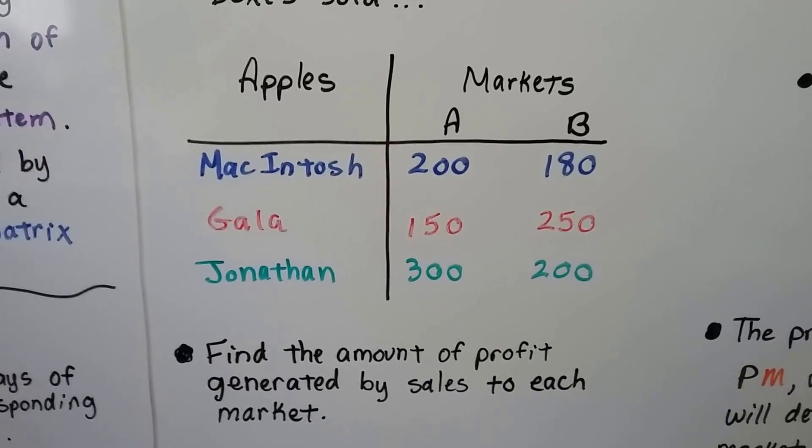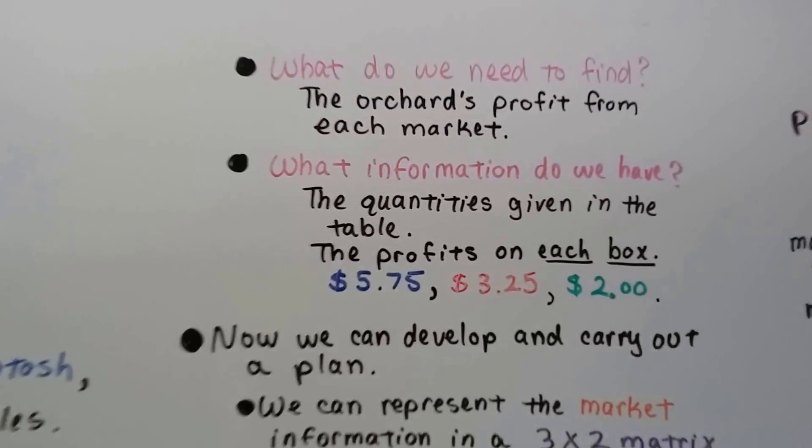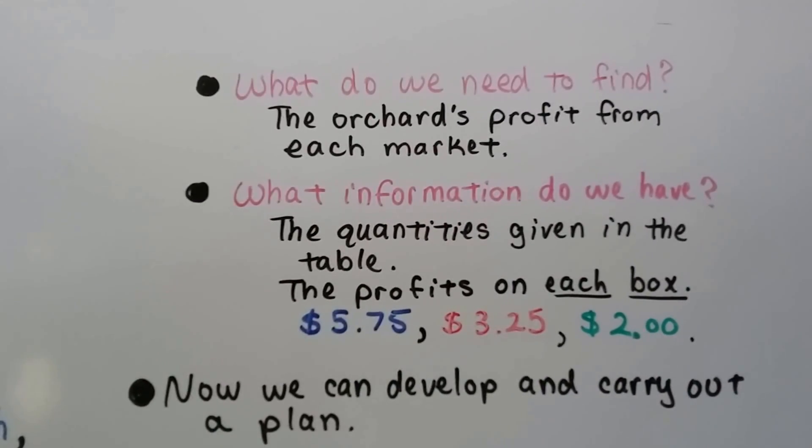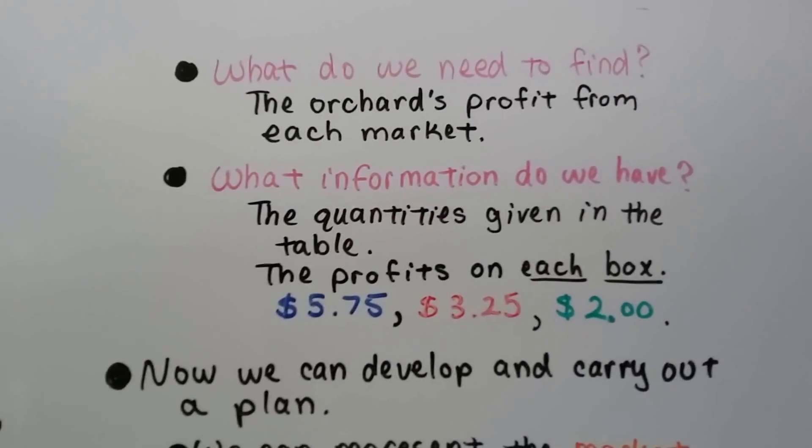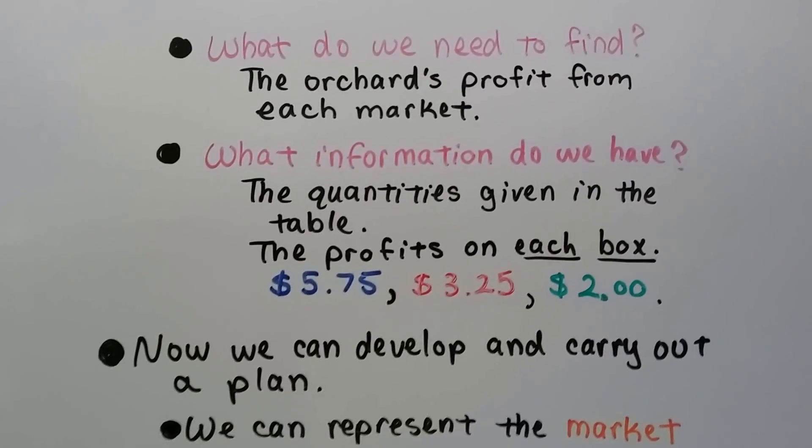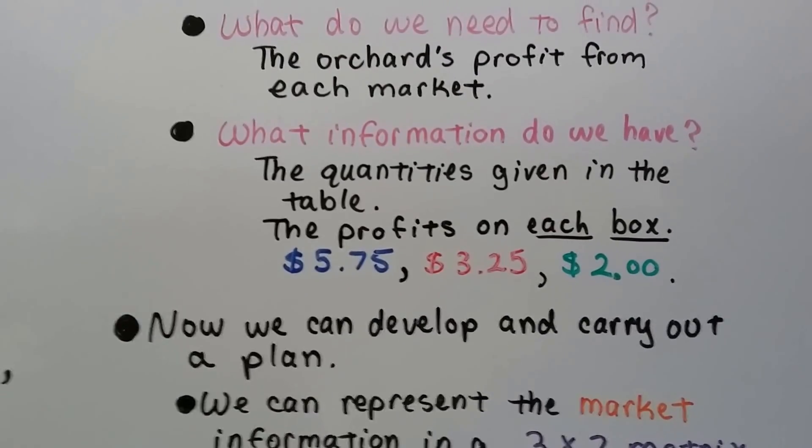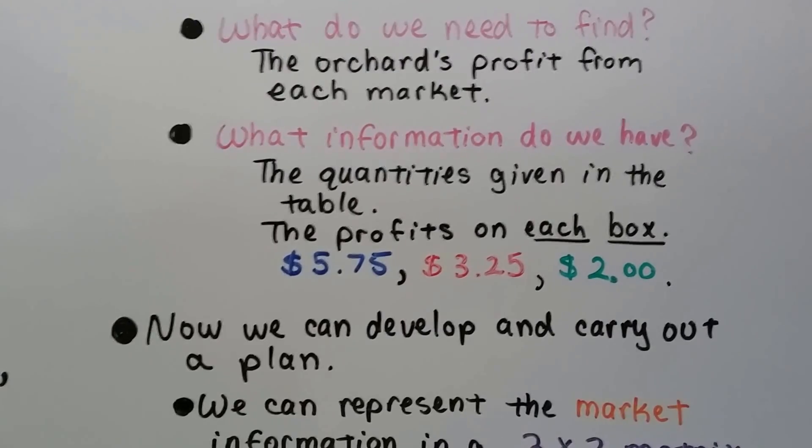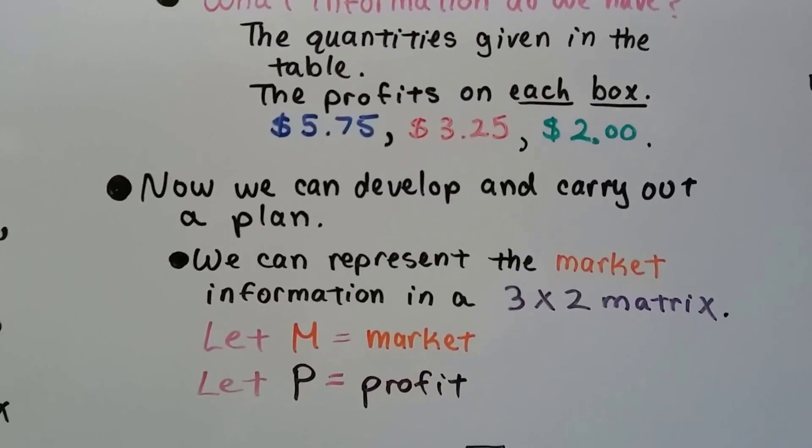First we have to think, what do we need to find? We need to find the orchard's profit from each market A and B. And what information do we have? We have those quantities that were given in the table, and we know the profits on each box: the $5.75, the $3.25, and the $2. Now we can develop and carry out a plan.